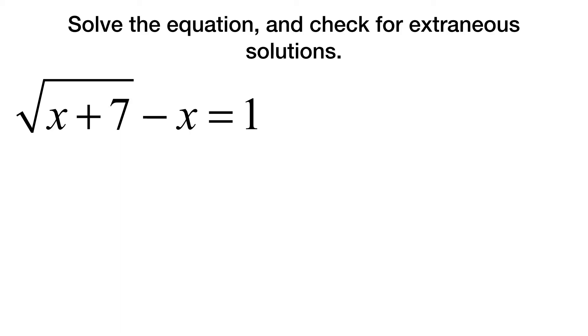Okay, let's try this one. So in this case, what we would do first is we would try to get the square root by itself by adding x. So the square root of x plus 7 ends up equaling x plus 1. At this point, we square both sides.